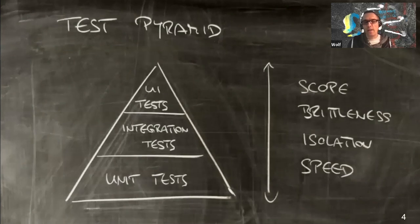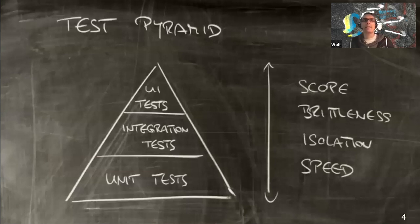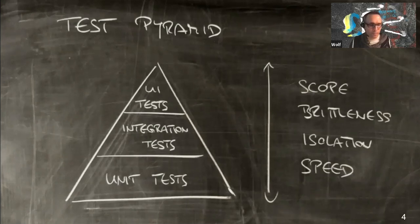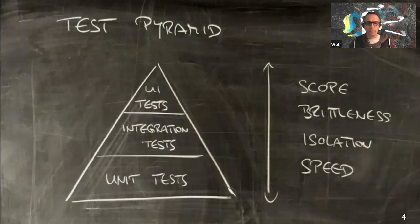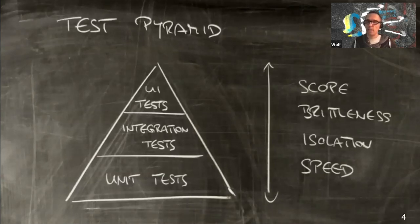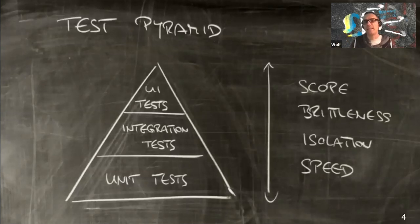A couple of years ago I worked on a codebase inherited from another party. When we looked at the tests, we realized the shape of the test pyramid for that codebase was actually a diamond: many integration tests, some UI tests, but only a small number of unit tests — a diamond shape — and that had serious implications.